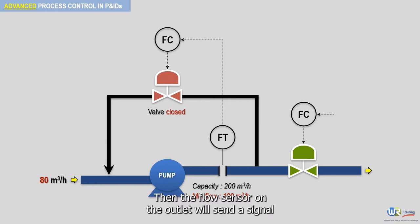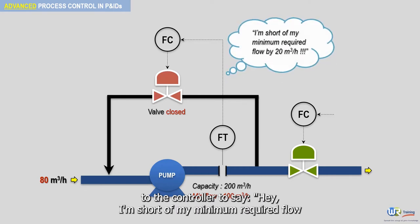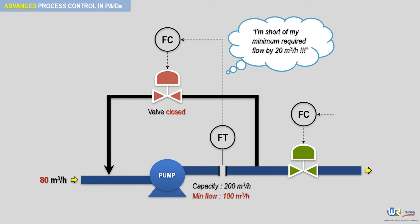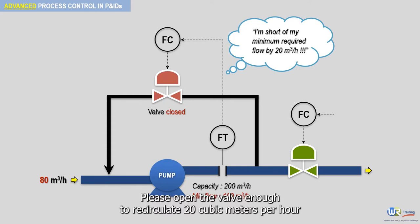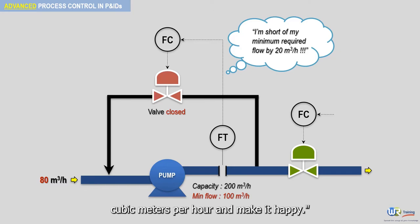then the flow sensor on the outlet will send a signal to the controller to say: I'm short of my minimum required flow by 20 cubic meters per hour and I'm worried about the pump. Please open the valve enough to recirculate 20 cubic meters per hour so we can fool the pump into thinking that the flow is 100 cubic meters per hour and make it happy.